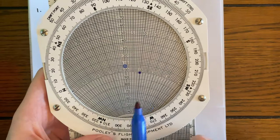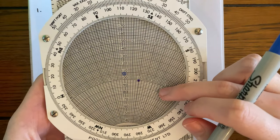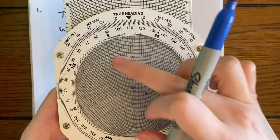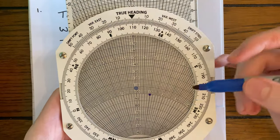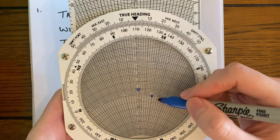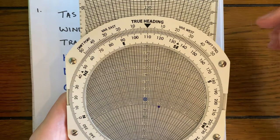It's a simple reading. So if we have anything on the right-hand side, we're going to add to our track. And anything to the left-hand side, we're going to take away. So we had 110 degrees as our track. We're on the 10-degree line here. We're going to add that on, and our heading is 120 degrees.